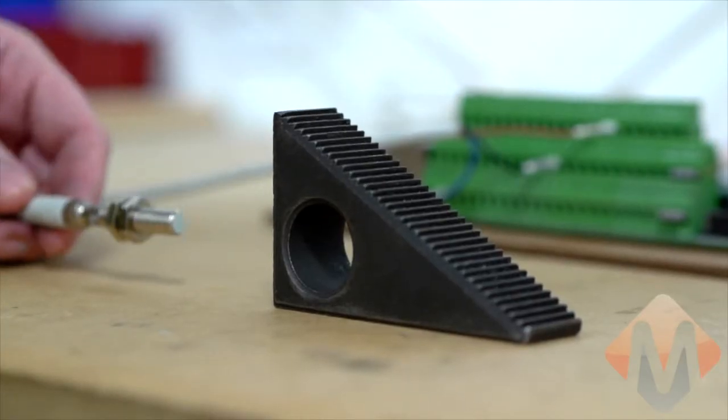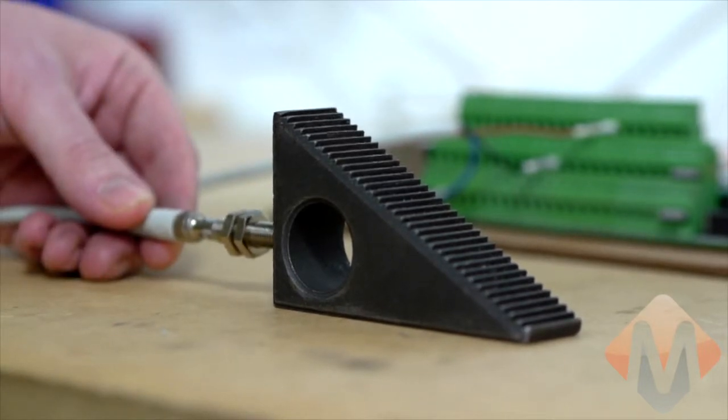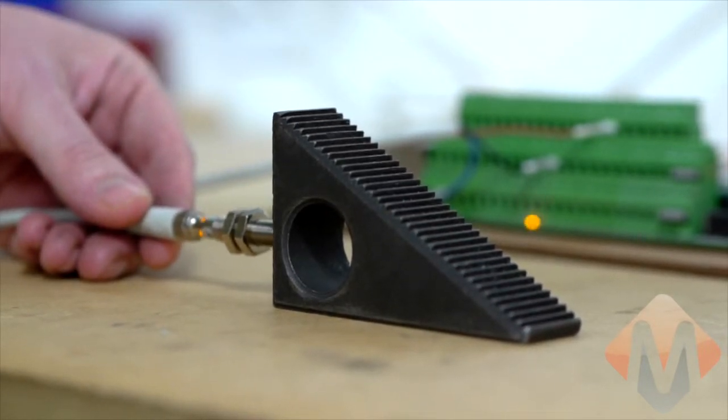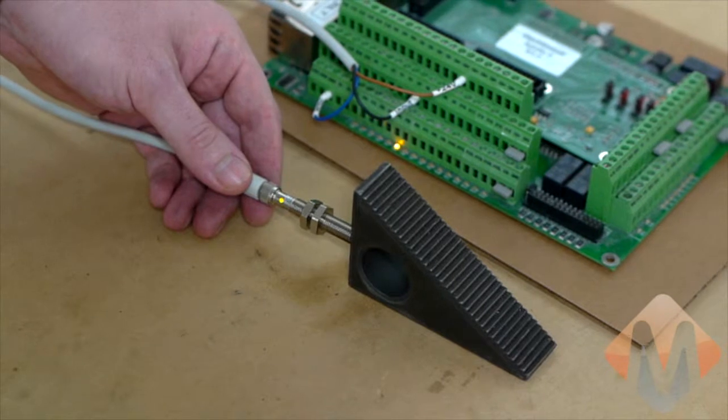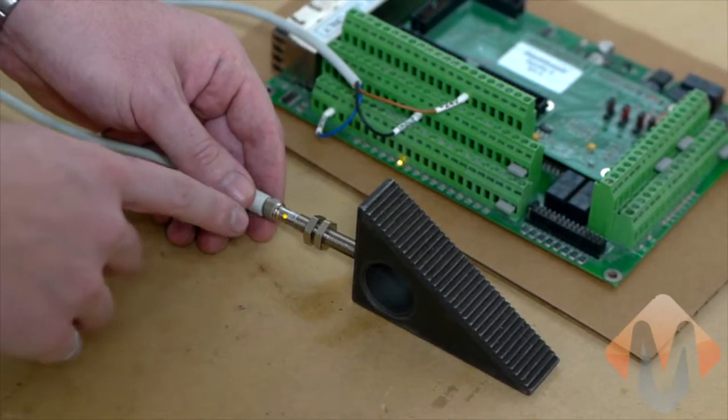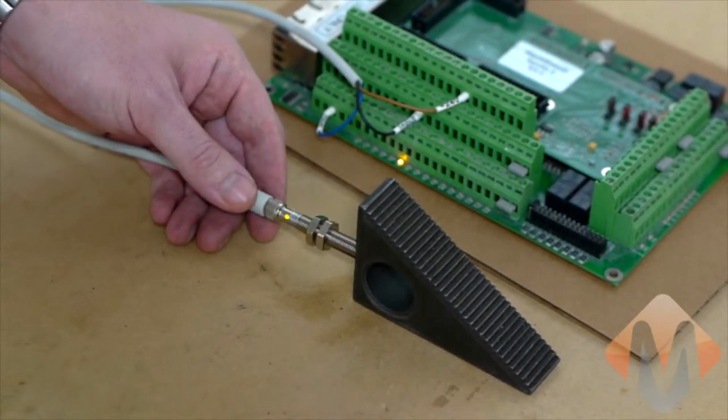The way it works is when the proximity switch gets close to a piece of metal, it senses it. The LED turns on, both on the switch and on the board. Now you know how to wire up a proximity switch to the Apollo series breakout boards.